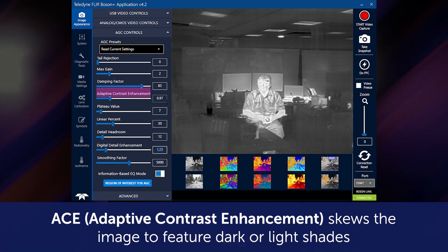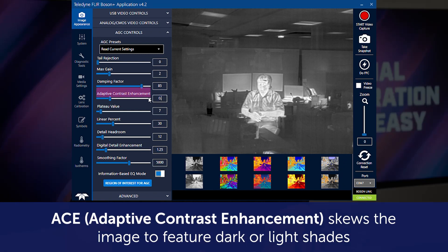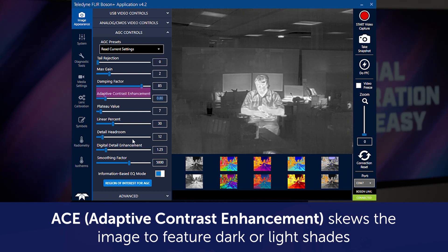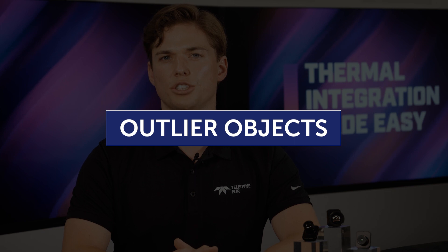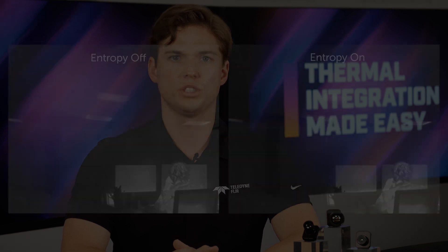ACE, or adaptive contrast enhancement, is a gamma-like correction that skews the image to feature dark or light shades in the image. Boson features entropy mode by default, which will deprioritize AGC in the regions with low contrast, like the sky, to allocate more space for other scene content.